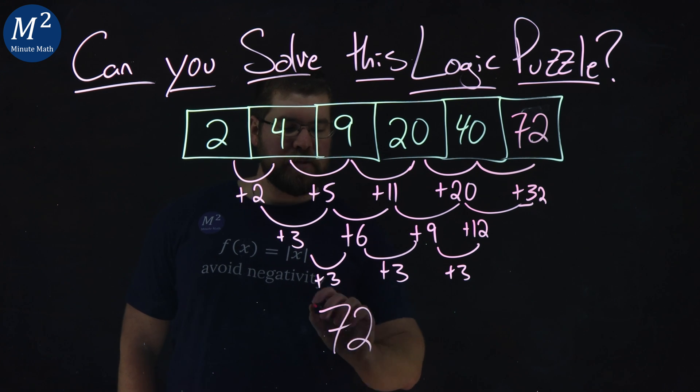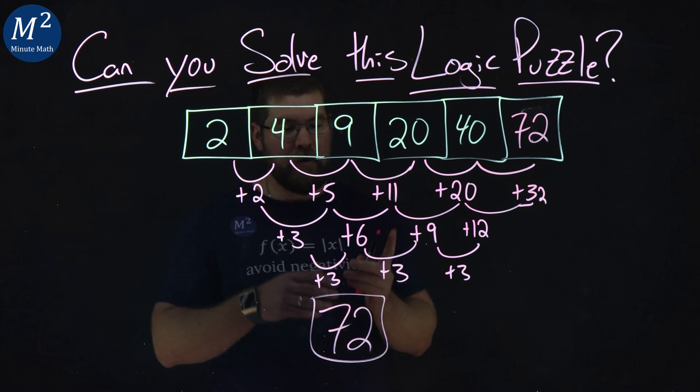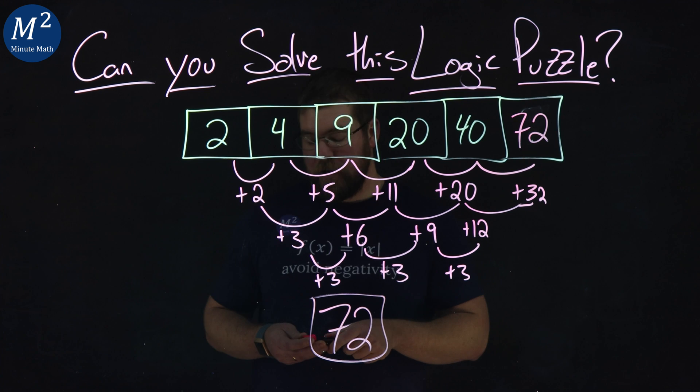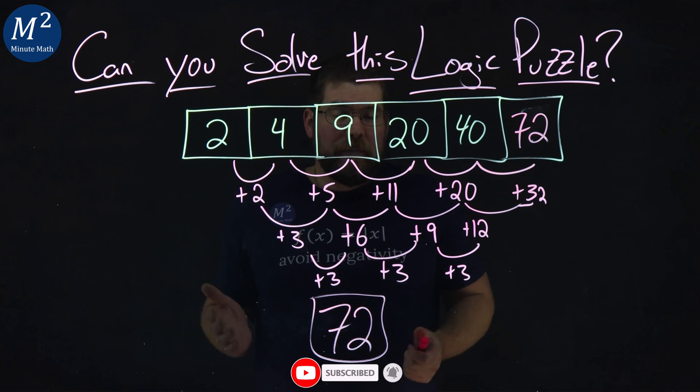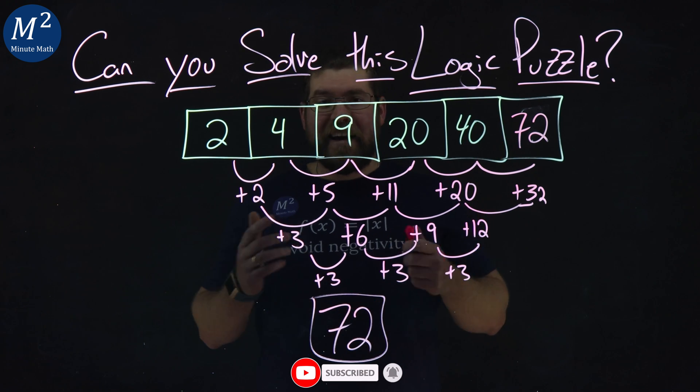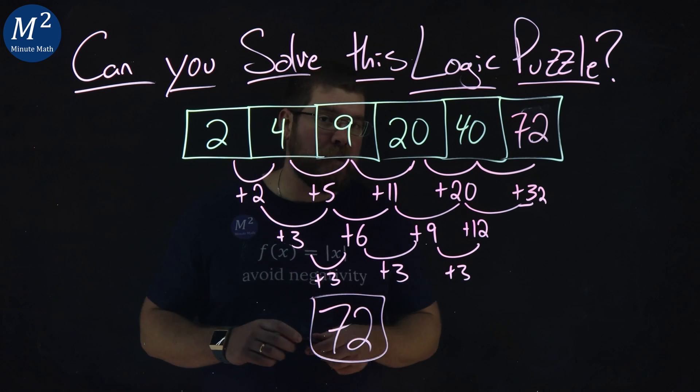So 72 was the magic number we were looking at with the pattern that we came up with here. Did you have the same exact pattern and the same exact answer as I did? Great. If you didn't and you had a different pattern, again, please let me know down in the comments section below.